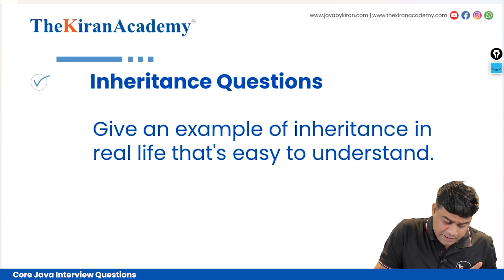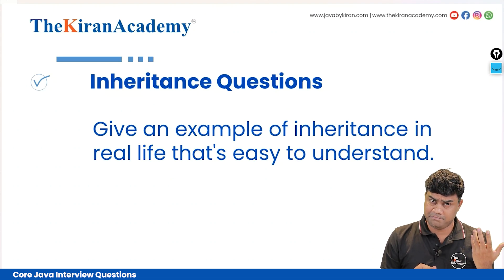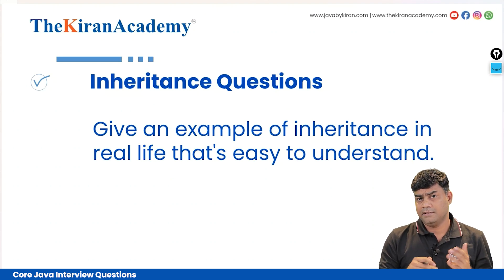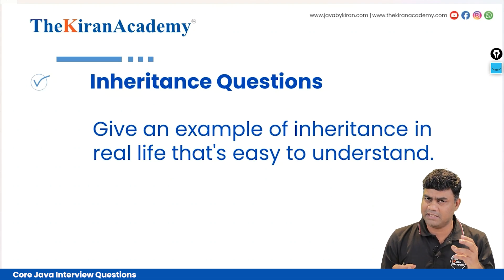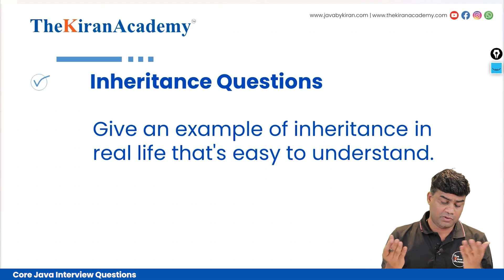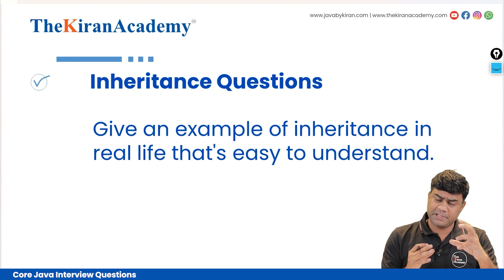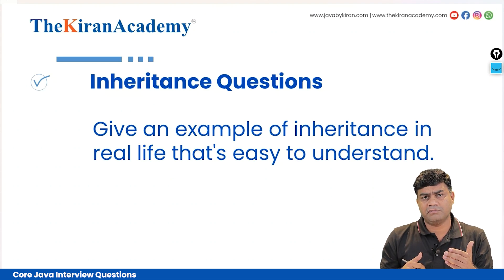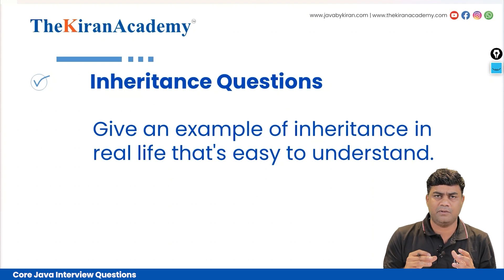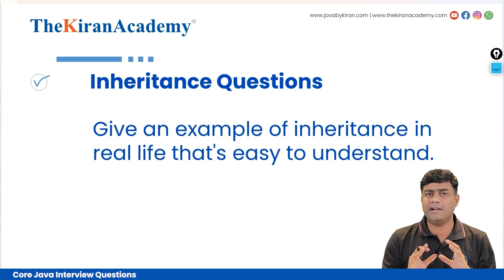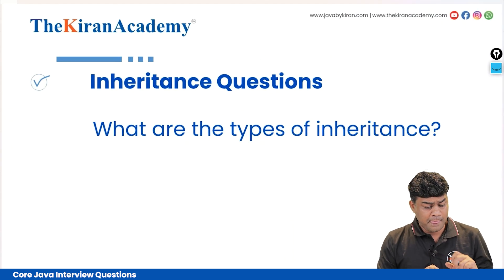Give an example of inheritance in real life that's easy to understand. If you speak about human beings, there is a parent and a child — father and son, father and daughter — these are very basic real-life examples of inheritance. Another example: there is a speaker, and we use a woofer along with it. The speaker features come into the woofer, plus bass and treble are added into the main sound — that is increasing the feature.